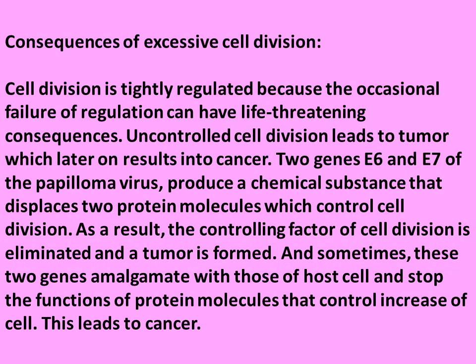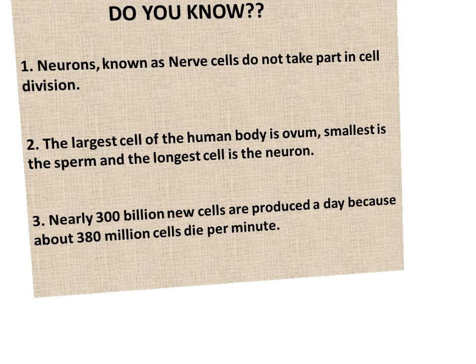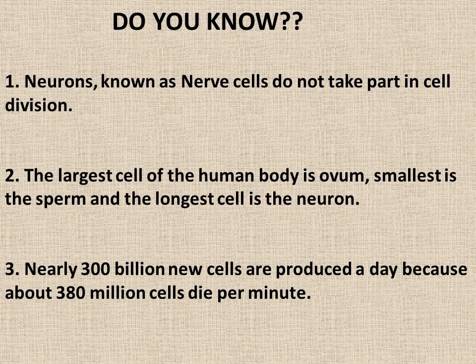The controlling factor of cell division is eliminated and a tumor is formed. Sometimes these two genes amalgamate with those of the host cell and stop the functions of protein molecules that control the increase of cells, and this leads to cancer.